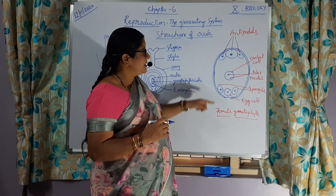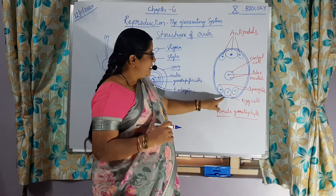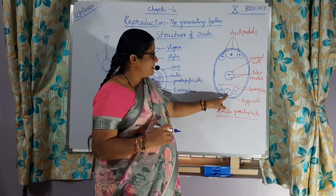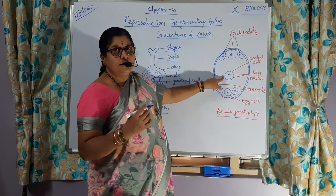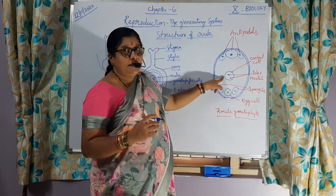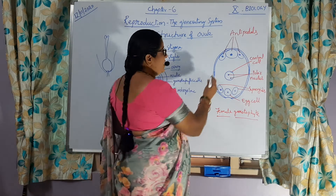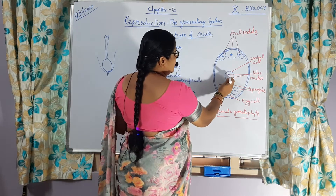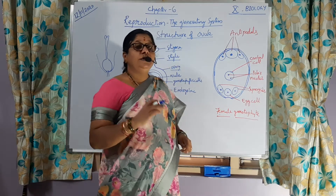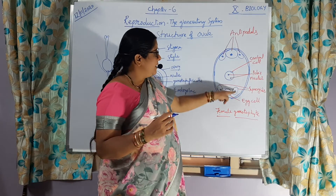What are those three groups of cells? In the anterior region, antipodals are there, and here we observe two synergids and one egg cell, and the central cell. Why it is present at the center? The number of nuclei, if we observe: 1, 2, 3, 4, 5, 6, 7, 8 — so 8 nuclei are present.